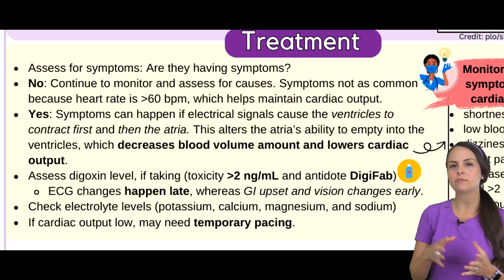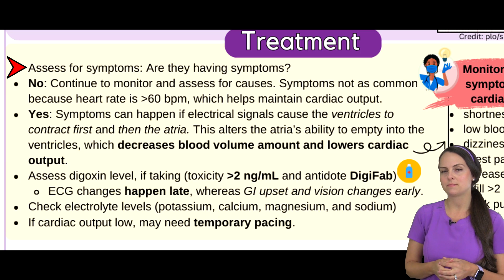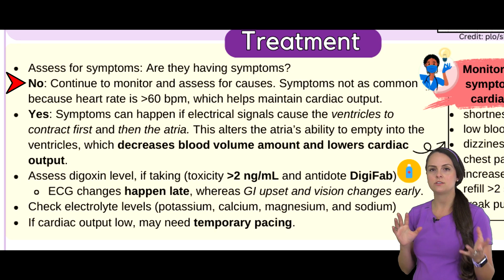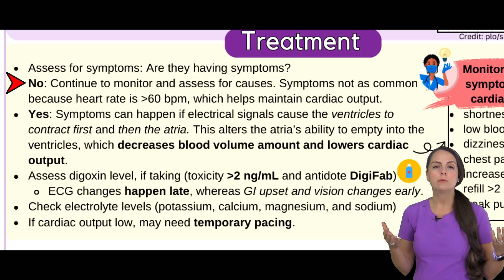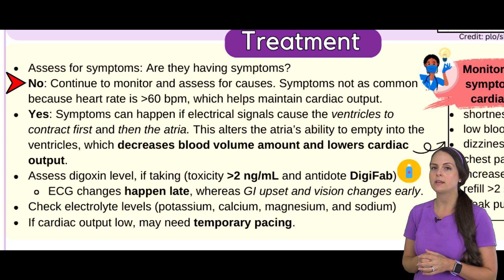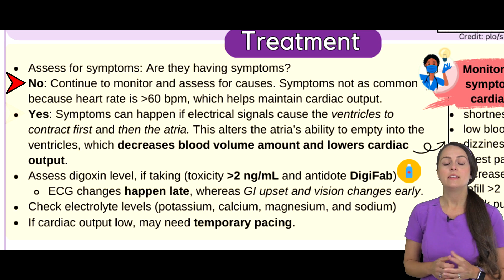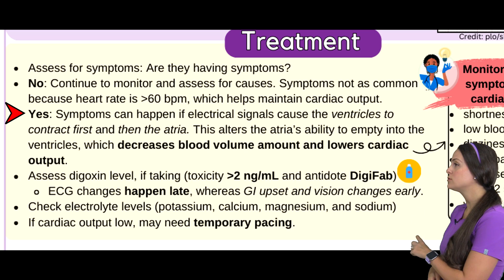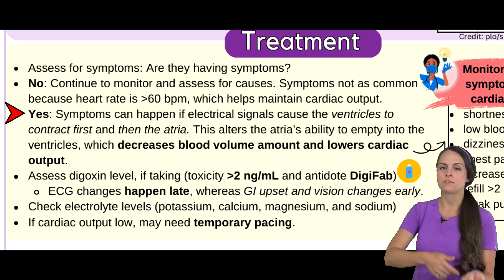As a nurse, whenever we see our patient in this rhythm, we want to assess them and see if they're having symptoms. Many times patients are not going to have symptoms because the rate is within 60 to 100 beats per minute and they're able to maintain their cardiac output. Therefore, we will continue to monitor them while looking at potential causes, especially digoxin use or electrolyte imbalances. Sometimes symptoms can present if electrical signals cause the ventricles to contract first and then the atria contract, because we're having retrograde signaling going up through the atria.